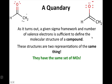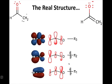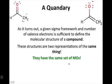So as it turns out, a given sigma framework and number of electrons is enough to define the molecular structure of a compound. In other words, both of those structures are two representations of the same thing, the same compound. If we independently generated these, we would find that they behave in exactly the same way. And the reason why is they have the same set of molecular orbitals. Those orbital interactions that we saw on the last slide, which you can look at in more detail on the wiki. The wiki talks about this in more detail. But those two drawings are actually representations of the exact same thing. They're both the enolate of acetaldehyde.